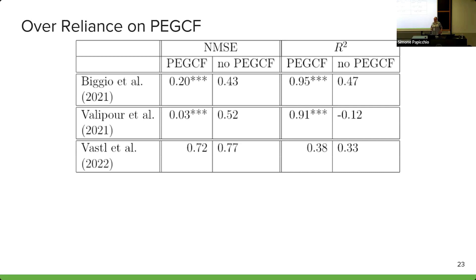VASL's network is unique in that they find coefficients both during training and after training. You can still see an increase in performance on numeric metrics when coefficient fitting is used after equation generation, but we believe the lack of statistical significance is explained by the fact that they do some preliminary coefficient finding during the actual training of the equation.